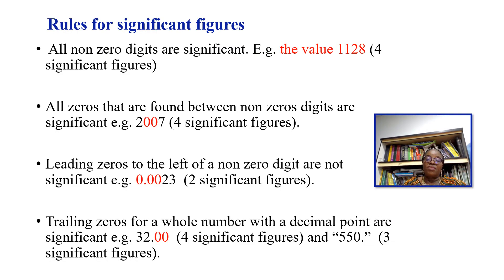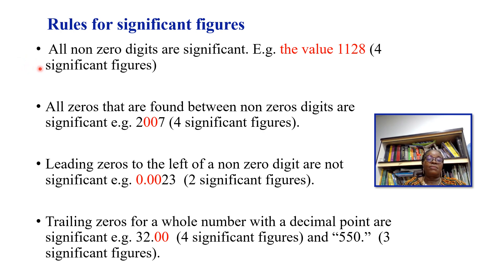What are the rules for significant figures? Rule number one states that all non-zero digits are significant. For example, in 1128 there are no zero digits, so all values are significant — we have four significant figures. Rule number two says all zeros found between non-zero digits are significant.